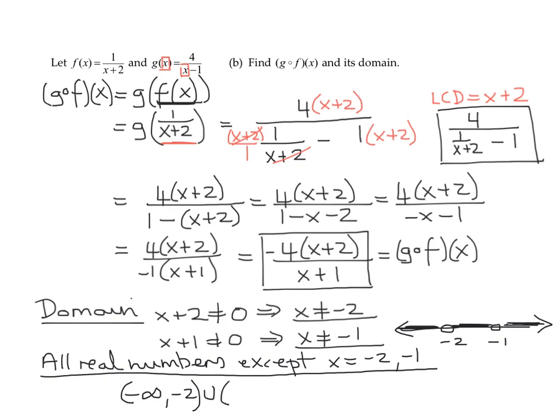So what would that look like? Negative infinity to negative 2 in parentheses, because I'm not including the negative 2. Union with the middle section, negative 2 to negative 1. Union with negative 1 to infinity. So depending on how you're asked for the answer, you can write it out or write it in interval notation.